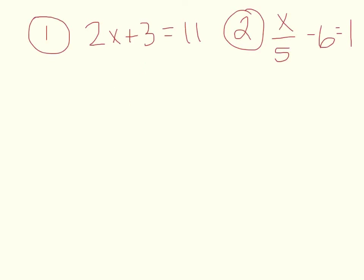So number 1, 2x plus 3 equals 11. So what we're going to do, I'm going to put my equal sign, make sure I know where that is. I want to get x by itself, so I need to move everything away from x.